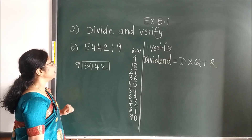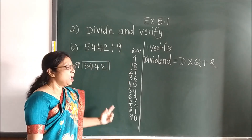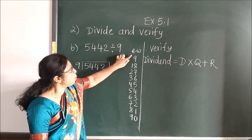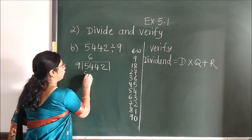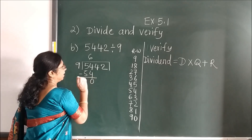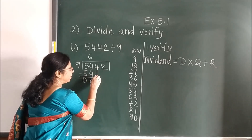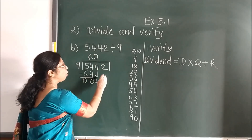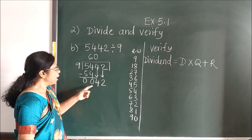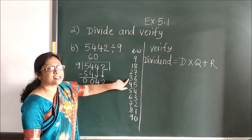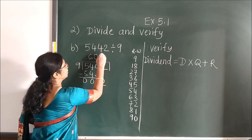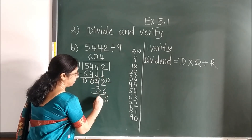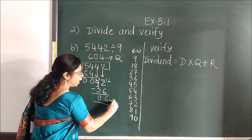Now here, B: again I have written rough work table and I use this table to solve. 54 — less than 54 is right here, 54 itself. Subtract, you get remainder 0. Bring the next number down, but this is less than 9, so write 0 and bring the next number down. Less than 42: 36 is less than 42, so 9 fours are 36. Subtract — you get 6 here and 0. This is your quotient and this is your remainder.